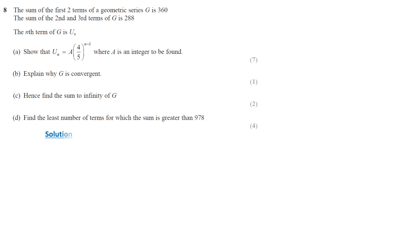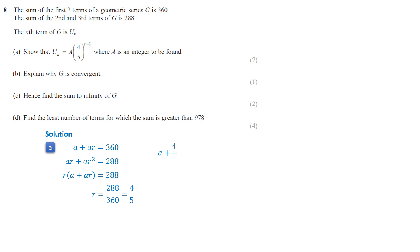This question involves a geometric series. The sum of the first two terms, a plus ar, equals 360. The sum of the second and third terms, ar plus ar squared, is 288. Factoring out r from the second equation, we get r times (a plus ar) equals 288. From the first equation, a plus ar is 360, so r equals 288 over 360, which simplifies to 4 over 5. Substituting r equals 4 over 5 into the first equation, we get the first term a equals 200. Using the formula for the general term of a geometric series, un equals 200 times (4 over 5) raised to the n minus 1.